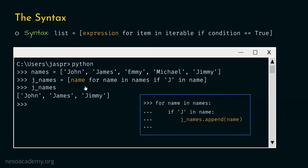Don't forget to wrap the entire statement within square brackets so that we get a list as output. j_names is the variable pointing to this new list. If we type j_names and hit enter, we get the list of three items: John, James, and Jimmy. With this, I hope it is clear how list comprehension works.